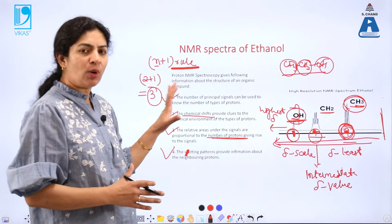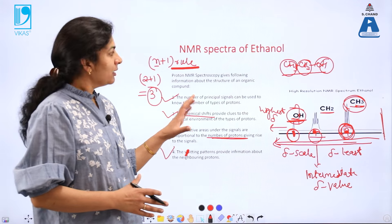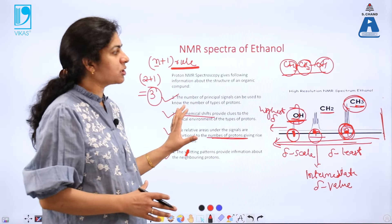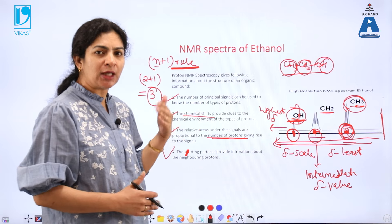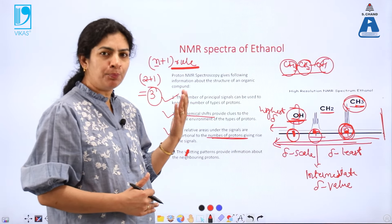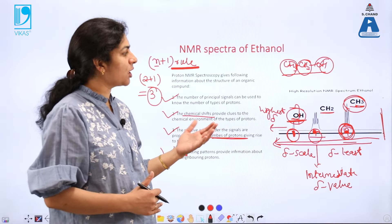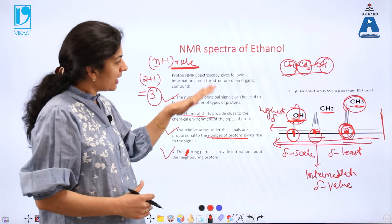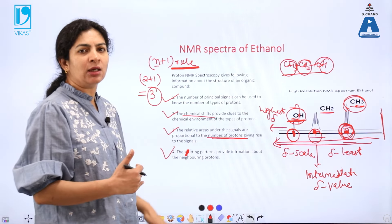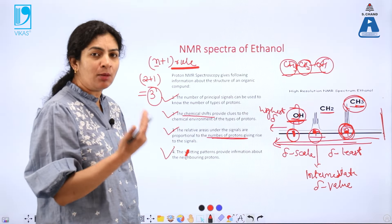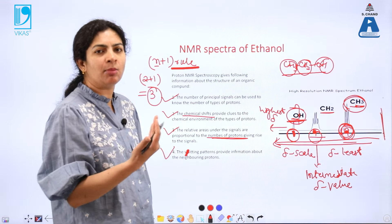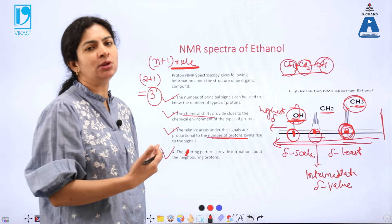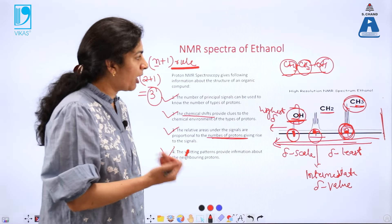I think it is quite clear that NMR talks about the different types of nuclei present in a molecule. Understanding all these points will help us characterize the NMR spectrum of any other organic compound.